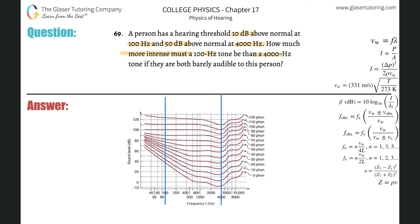Now find each decibel value under normal conditions. If I draw my line over here, at 100 hertz this value looks like it's going to be about 38 decibels. And then this one down here looks like it's going to be roughly negative seven decibels. It's tough to really tell, but about negative seven decibels.